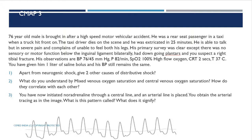Central venous oxygen saturation (ScvO2) is obtained from the superior vena cava or right atrium via a central line. The correlation between them: ScvO2 is approximately 5% less than the mixed venous oxygen saturation (SvO2).